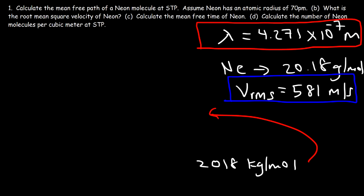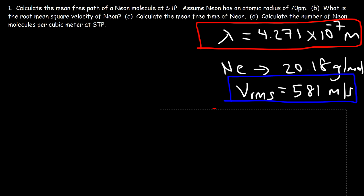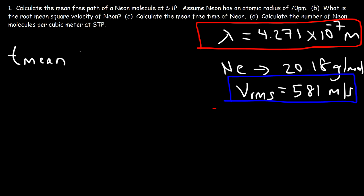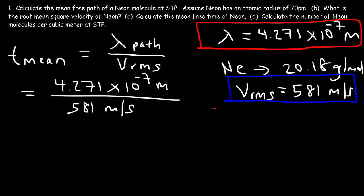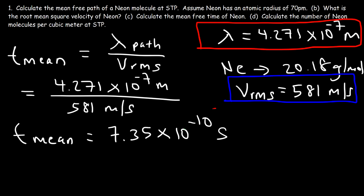Now let's move on to part C: calculate the mean free time of neon. Since we already have the mean free path, it's relatively simple. The mean free time is simply the mean free path divided by the speed, using the root mean square velocity. So it's 4.271 times 10 to the minus 7 meters divided by 581 meters per second. The mean free time is 7.35 times 10 to the minus 10 seconds.